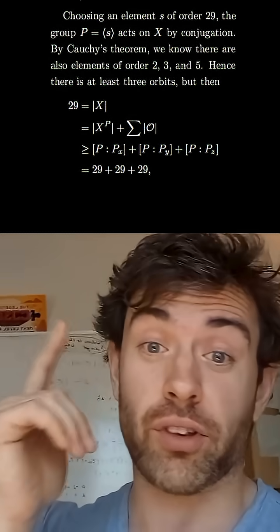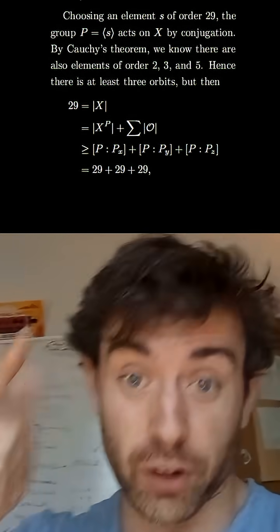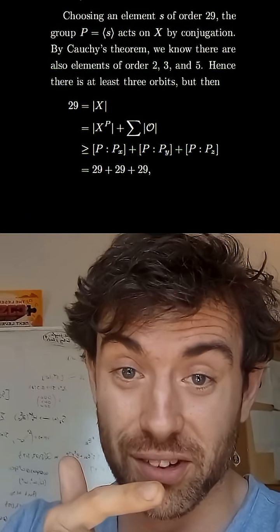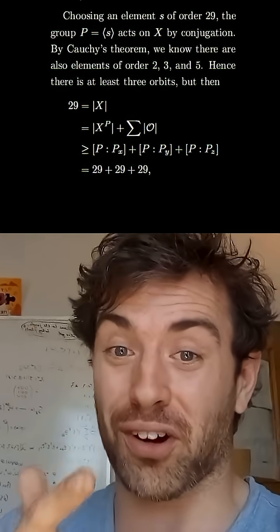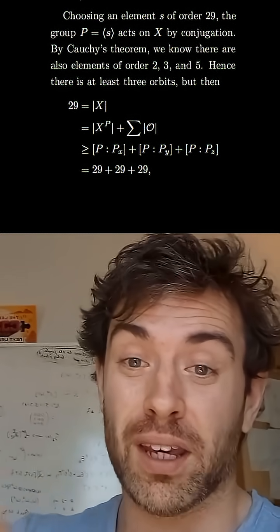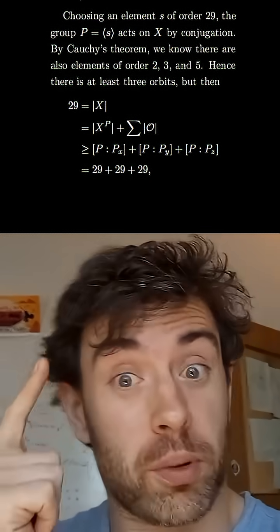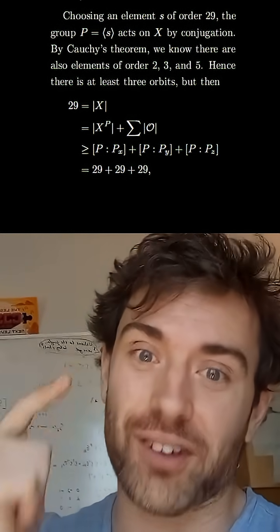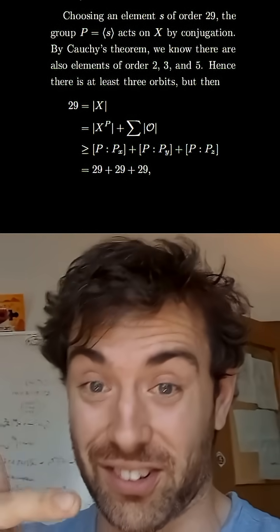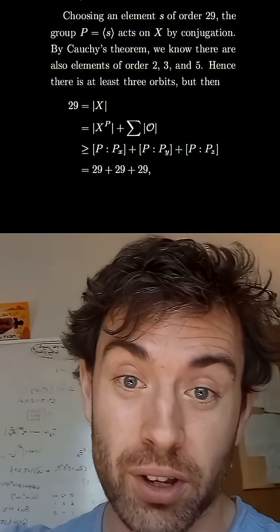So decomposing the set of 29 elements into its fixed points and its non-trivial orbits, we could again assume for the sake of contradiction that there were no fixed points, in which case there's at least three non-trivial orbits. And by the orbit-stabilizer theorem, the orders of each of those orbits have to be the indices of the stabilizer subgroups.